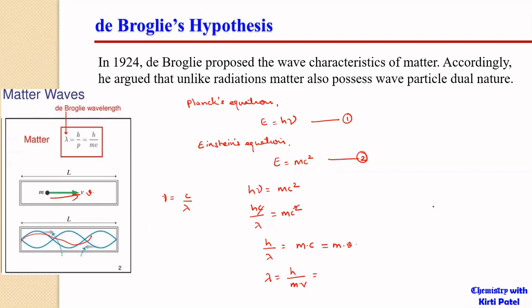The product of mass and velocity gives the momentum of the particle, which can be replaced by P. So we have λ = h/P. This equation is called the de Broglie equation, which relates the wavelength of the particle with its momentum. Momentum is a particle property, and wavelength is a wave property, so this equation equates the particle property with the wave property.